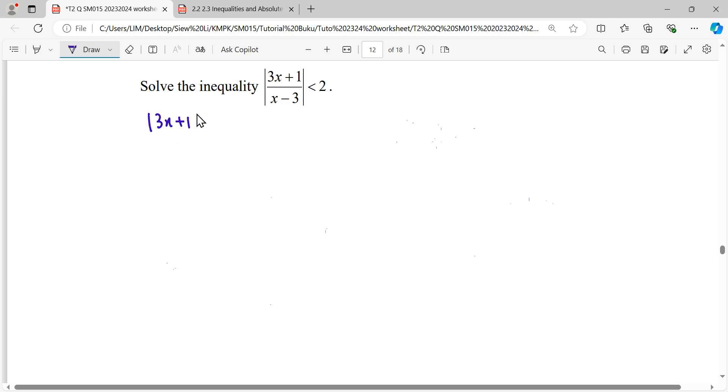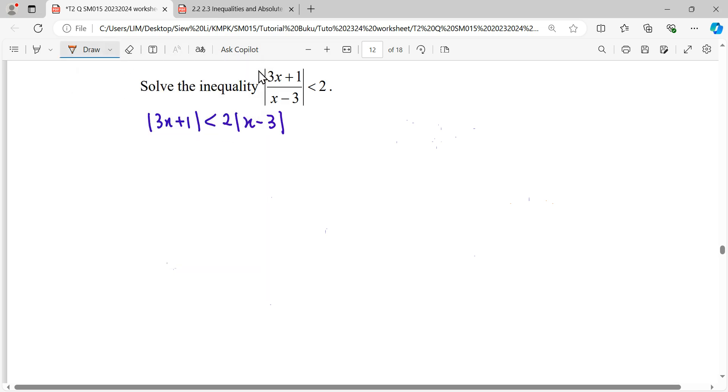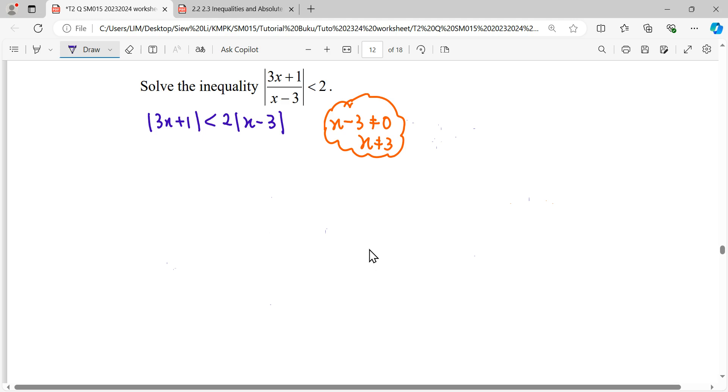So we can simplify this question into both sides modulus, but be careful when you want to multiply our denominator to the right hand side. This denominator cannot take the value of zero, so x cannot take the value of 3. We have to exclude the number that can make our fraction become undefined.